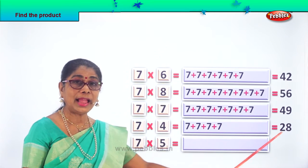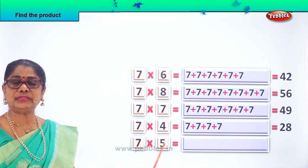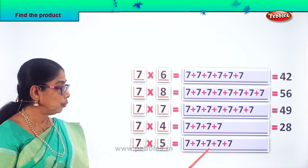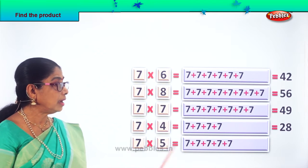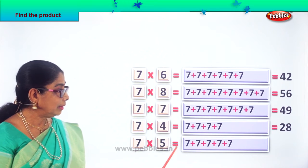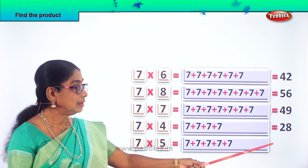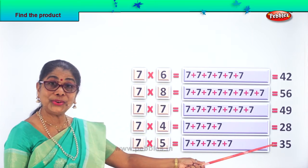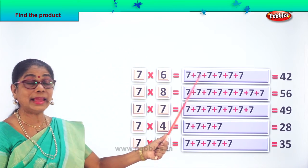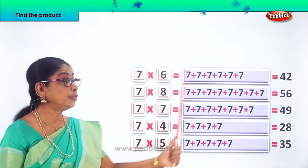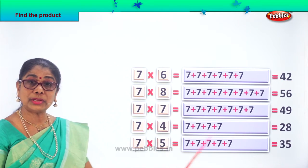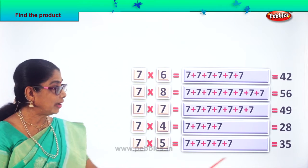7 fours are 28. And finally, what are 7 fives? Find the product of 7 into 5 — 7 five times: 1, 2, 3, 4, 5. What are 7 fives? 7 fives are 35. So you get the answer — 7 fives are 35. So you learned: 7 sixes are 42, 7 eights are 56, 7 sevens are 49, 7 fours are 28, and 7 fives are 35.